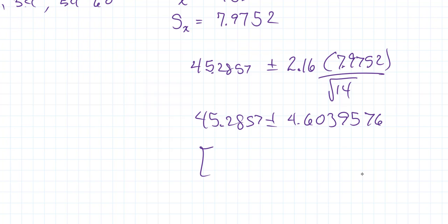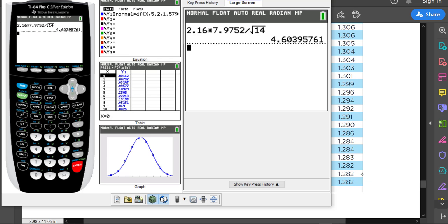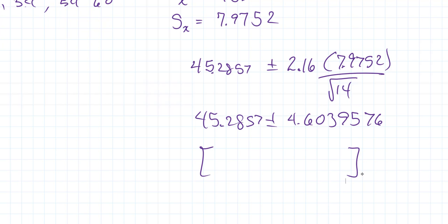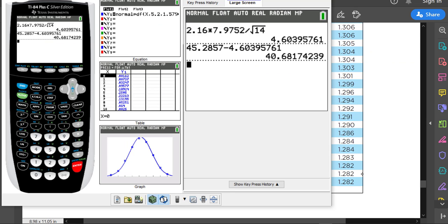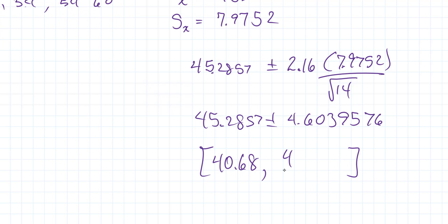So if you do the math on these two, you do the subtraction first to get the smaller and the addition to get the larger. I'll show it here. 45.2857 minus 4.6039. I'm going to keep the values in, because if I start rounding off too soon, I'm going to see more errors. And then 45.2857 plus 4.6039 all the way up to 49.89.